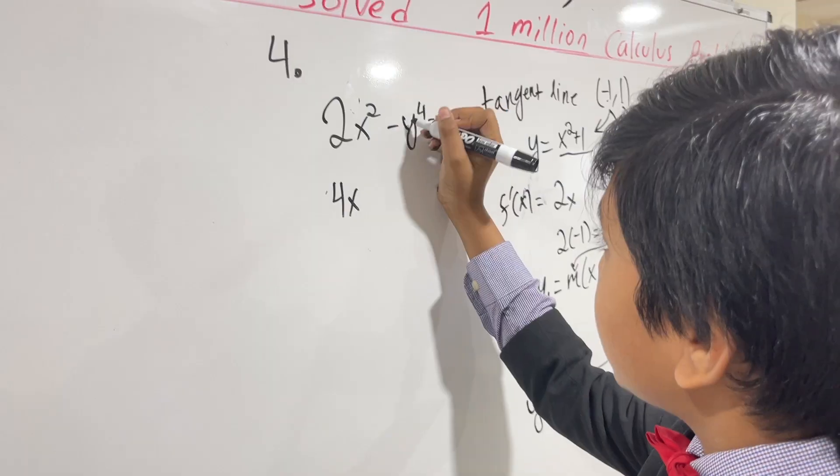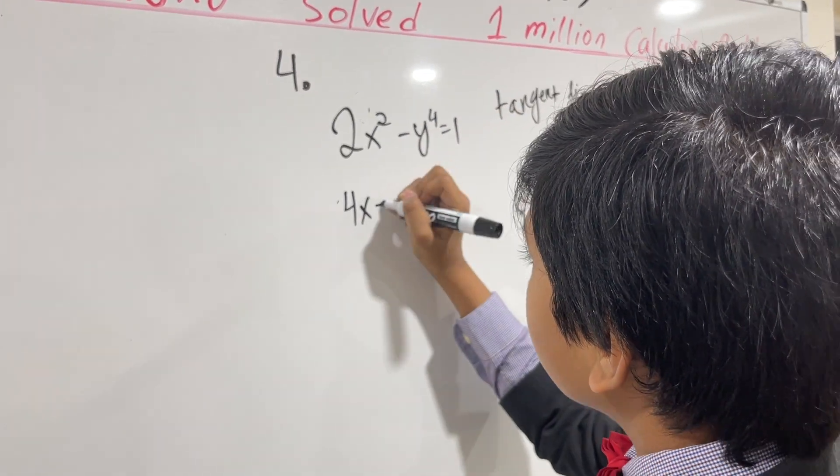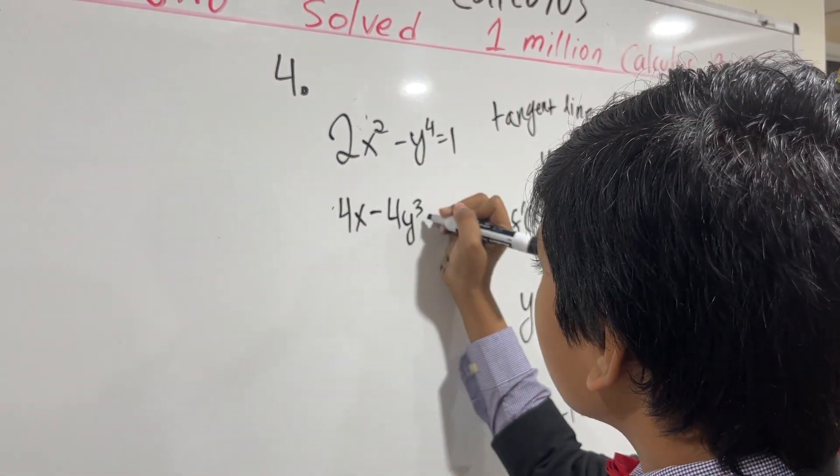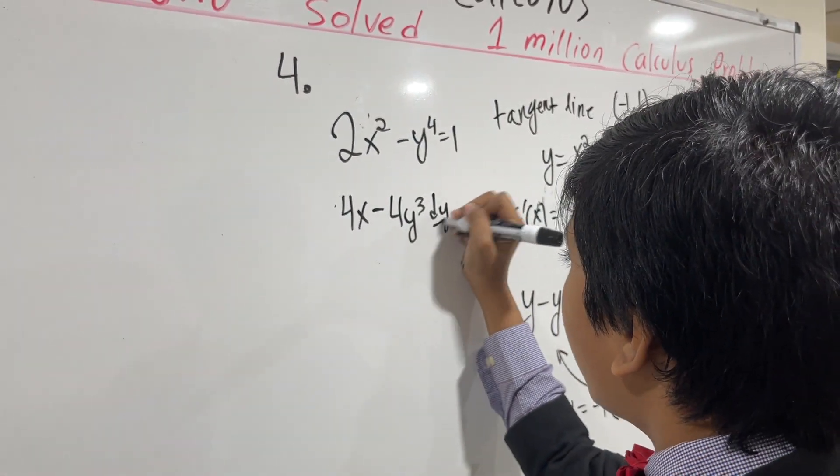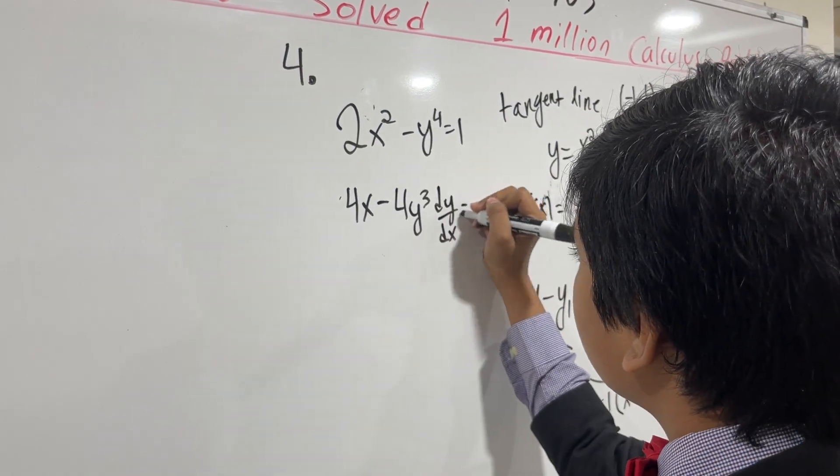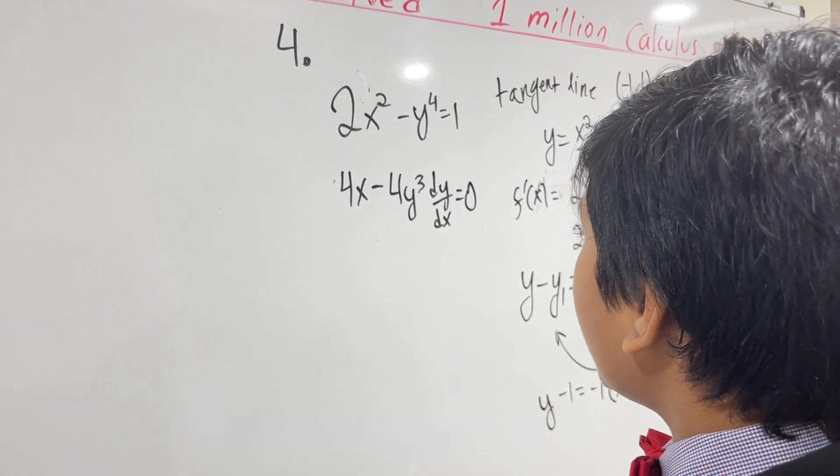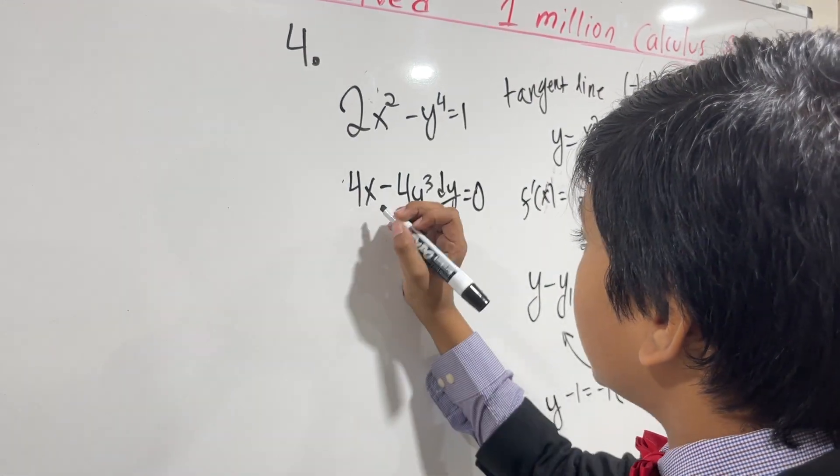And then, minus, taking the derivative of minus y to the 4th power, we get, using the power rule, 4y to the 3rd power. And we add dy dx to the end is equal to, the derivative of constant is 0. And now, we solve for dy over dx.